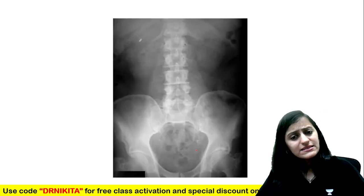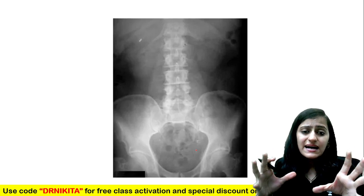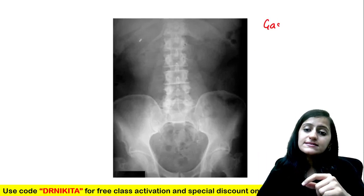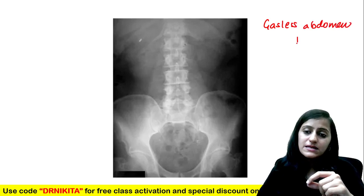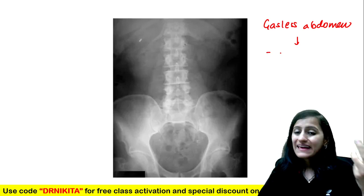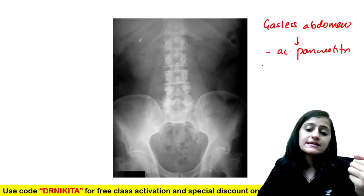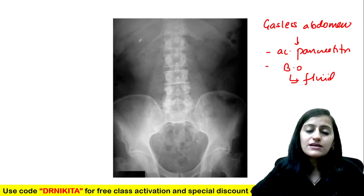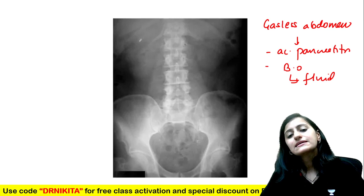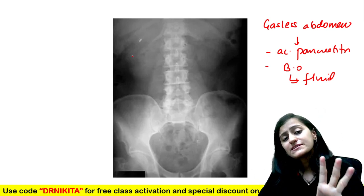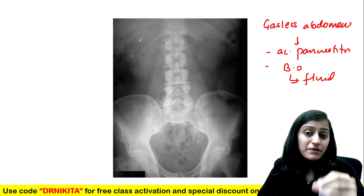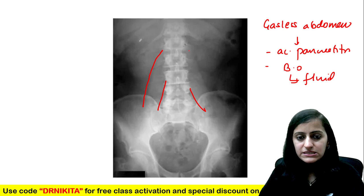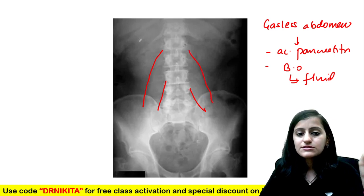The last image shows an abdominal X-ray with very little air visible in the abdomen — this is called a gasless abdomen, which has also been asked previously. Gasless abdomen can be seen in acute pancreatitis, where there is a lot of vomiting and no air gas in the bowel, or in bowel obstruction when all bowel loops are filled with fluid. It is a non-specific finding; if the patient is asymptomatic we don't need to worry, but in a symptomatic patient we need to think of bowel obstruction. The psoas muscle is also visible in this radiograph.